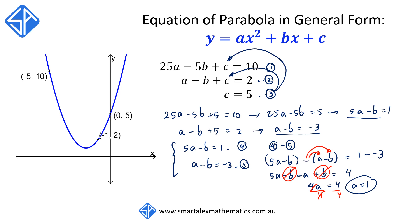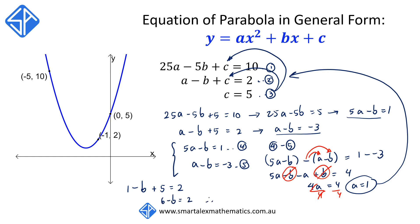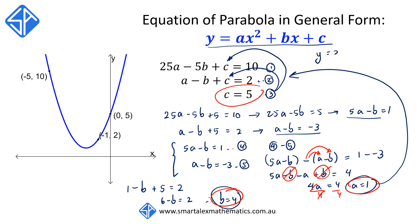Now that we have a is equal to 1, we can substitute back into any equation to get the value of b. Substituting into equation 2 gives us 1 minus b plus 5 is equal to 2, which simplifies to 6 minus b is equal to 2, so b is equal to 4. So we have c is equal to 5, b is equal to 4, and a is equal to 1. Substituting all these back into the general form, the equation of the parabola is y is equal to x squared plus 4x plus 5.